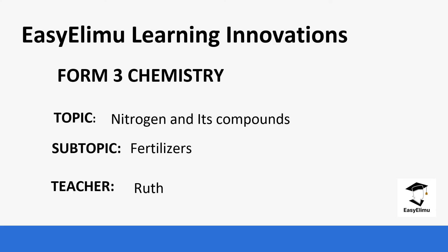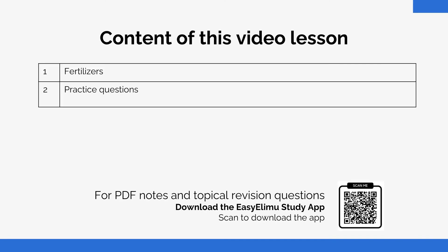Welcome to EZLM Learning Simplified. My name is Ruth and today we are going to be looking at the topic nitrogen and its compounds. Our subtopic for today is fertilizers. We are continuing on ammonia — we know one of the uses of ammonia is production of fertilizer. We will look at these fertilizers, the best alternative, how we can determine the best one to use, and then we'll do a few questions.